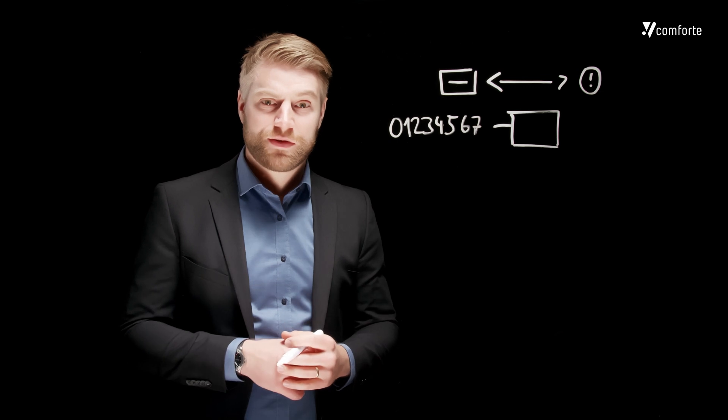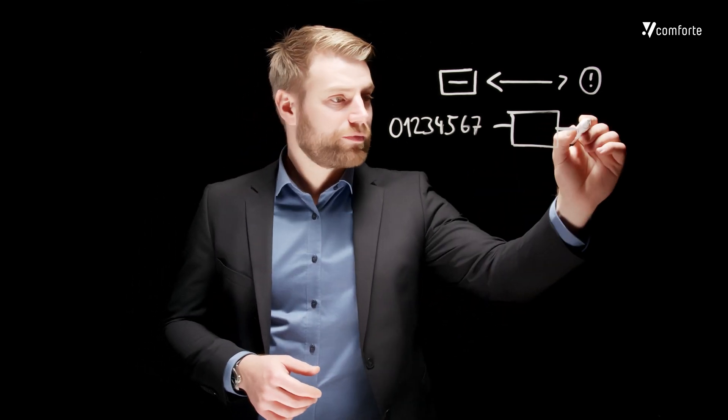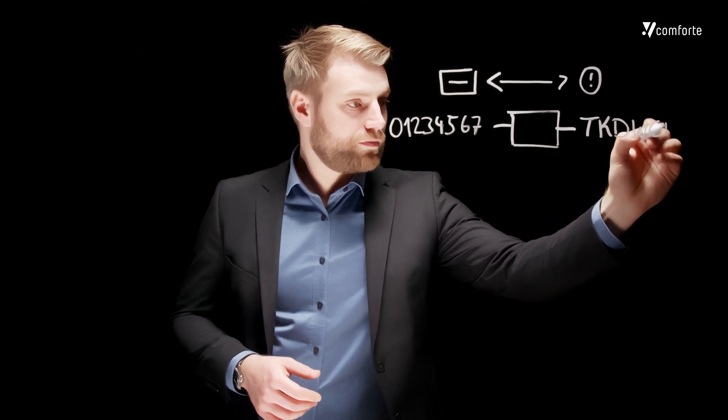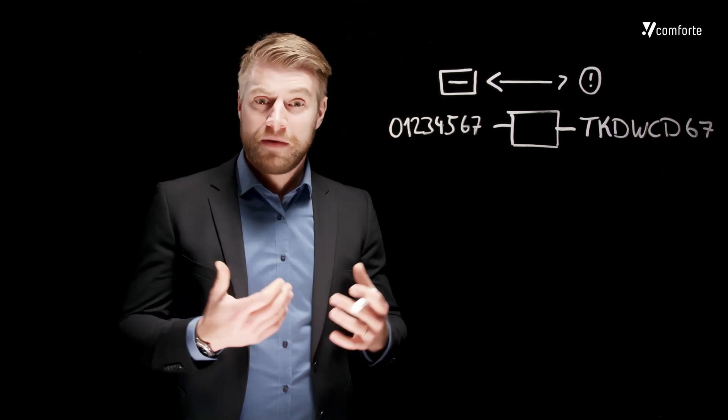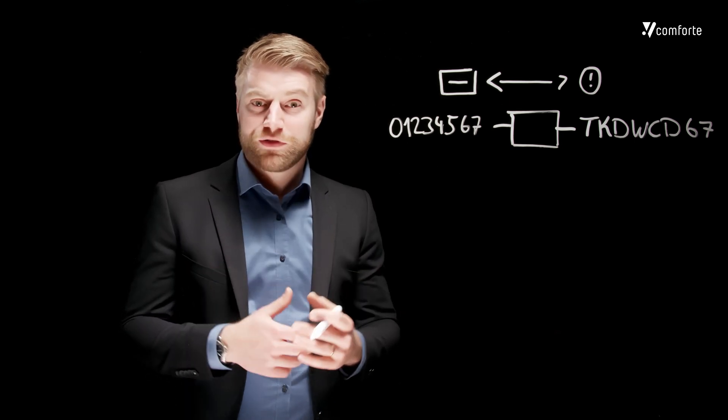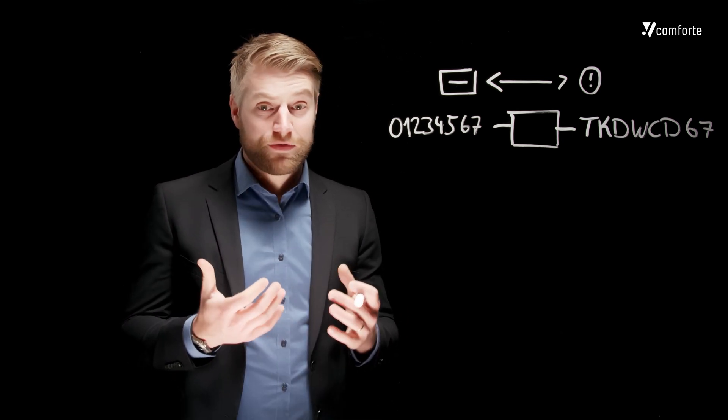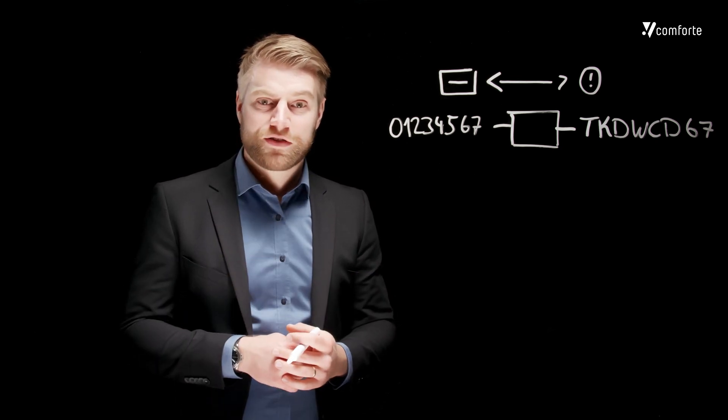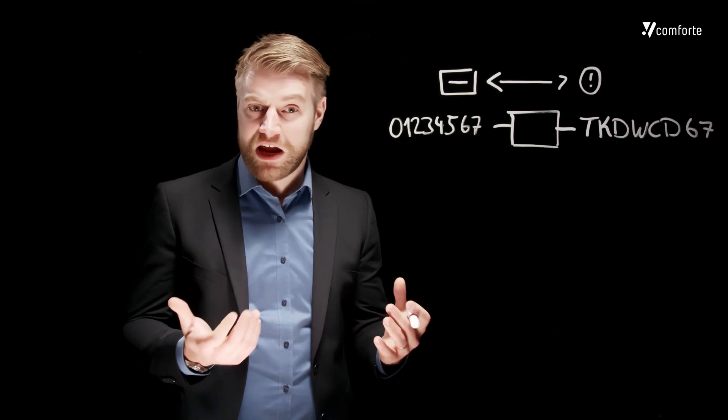And the good thing with most tokenization systems is that they allow you to determine how the token looks like. As an example here we created a token. And one of the main benefits of tokenization is that it's format preserving. So applications are able to process the data to run on tokenized data instead of the clear text data. And this basically reduces the exposure of sensitive information a lot. It's also easing the process of implementing the security method because you basically don't have to change applications.